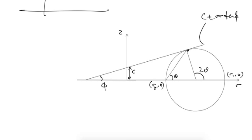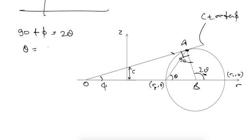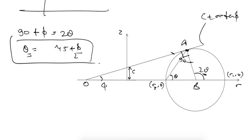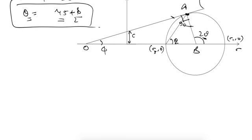The failure point is where the Mohr circle touches the line c + σ tan φ. At this point, c is the intercept and phi is the angle. From triangle OAB, the angle at the tangent point is 90 degrees (radius perpendicular to tangent), so 90 + phi = 2θ. Therefore, theta = 45 + phi/2, which is the angle of the plane at which failure will occur.